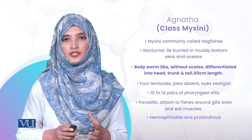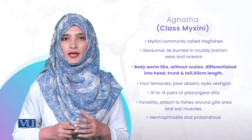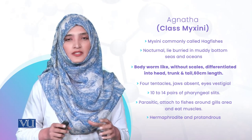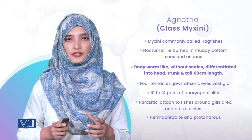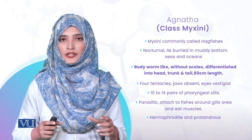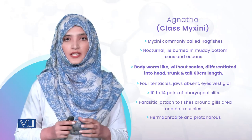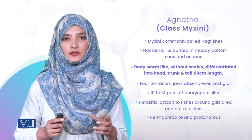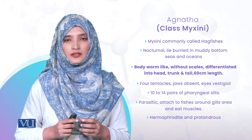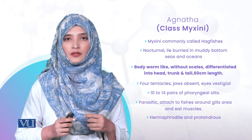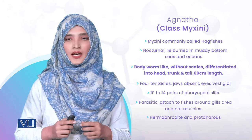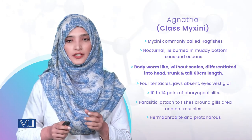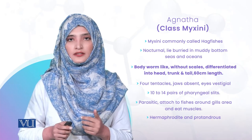External morphology کے بارے میں: they have elongated body, without scales, slimy ہوتی ہے کیونکہ اس کی skin کے اوپر mucous glands ہوتے ہیں جو mucous secretions provide کرتی ہیں۔ Body کے تین parts ہیں: head, trunk اور tail۔